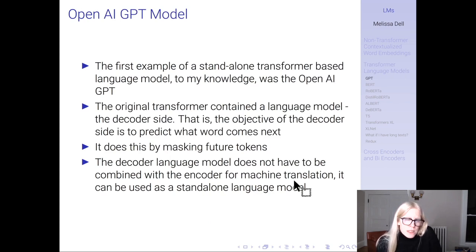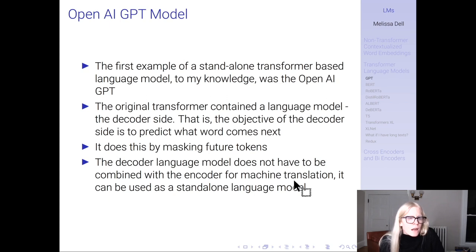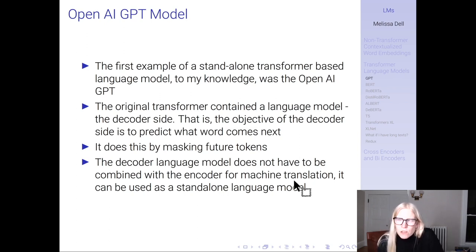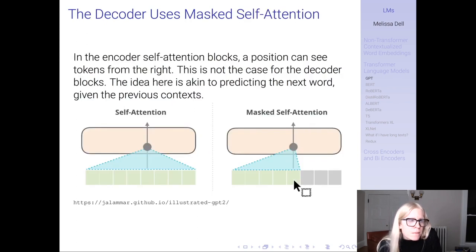The first example of a standalone transformer language model, to the best of my knowledge, was GPT by OpenAI. The original transformer contained a language model on the decoder side — it was predicting which word comes next. It does this by masking future tokens, so the model is not allowed to attend to future tokens in the sequence because its objective is to predict them. The decoder language model doesn't have to be combined with an encoder for machine translation — it can be used as a standalone language model. That's what GPT did.